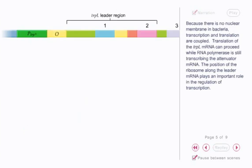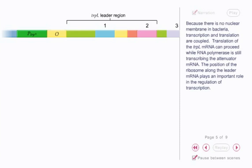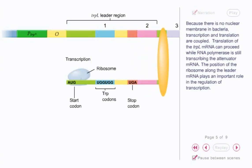Because there is no nuclear membrane in bacteria, transcription and translation are coupled. Translation of the trpL mRNA can proceed while RNA polymerase is still transcribing the attenuator mRNA.